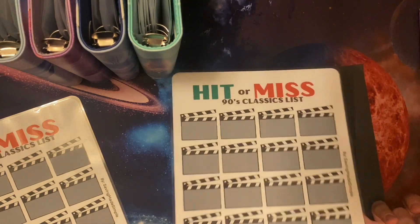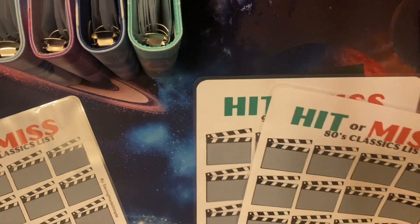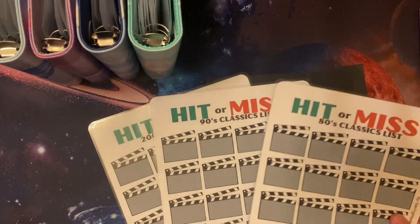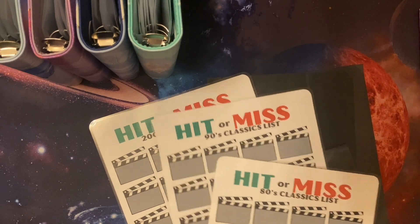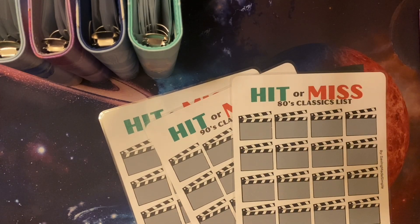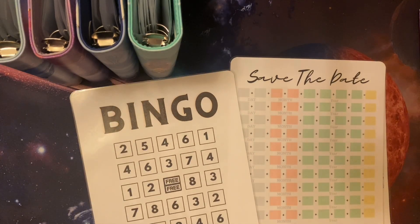There we go. So from now until August 3rd, if you buy one set of these hit or miss challenges, so there's the 80s, the 90s, and the 2000s, if you order one set of the hit or miss challenges, then you will receive one of either the save the date challenges or a bingo challenge for free.